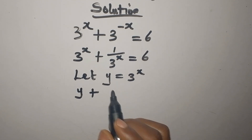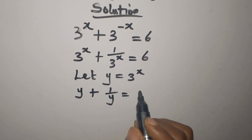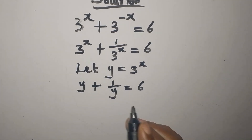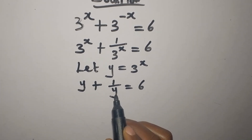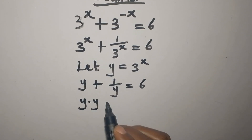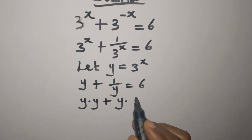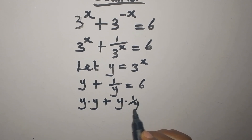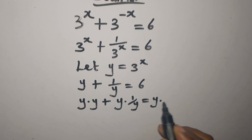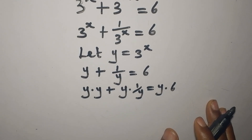...1 over Y, and that is equal to 6. We are going to clear out the fraction by multiplying everything by Y. So we have Y times Y, plus Y times 1 over Y, equals Y times 6. The LCM is Y.